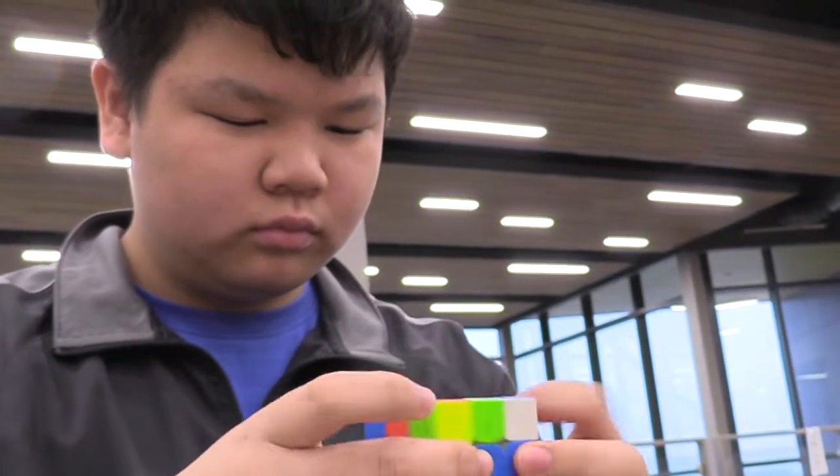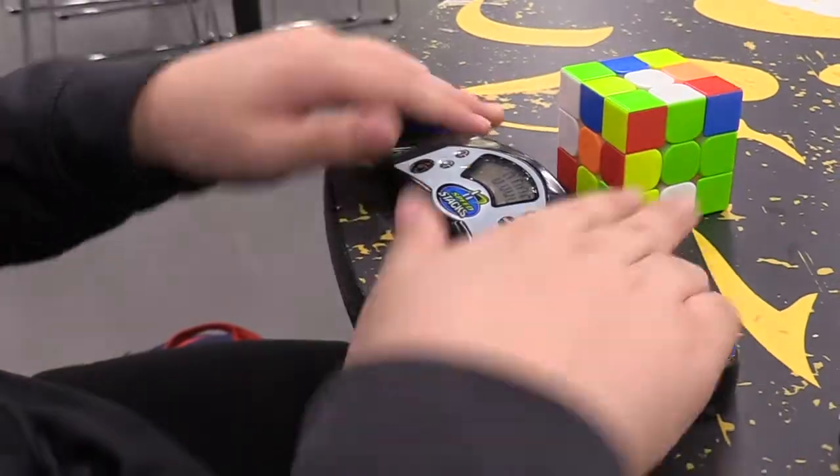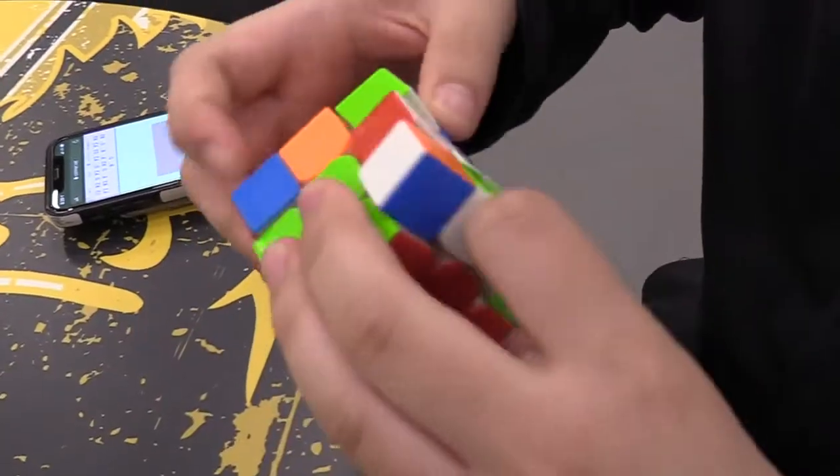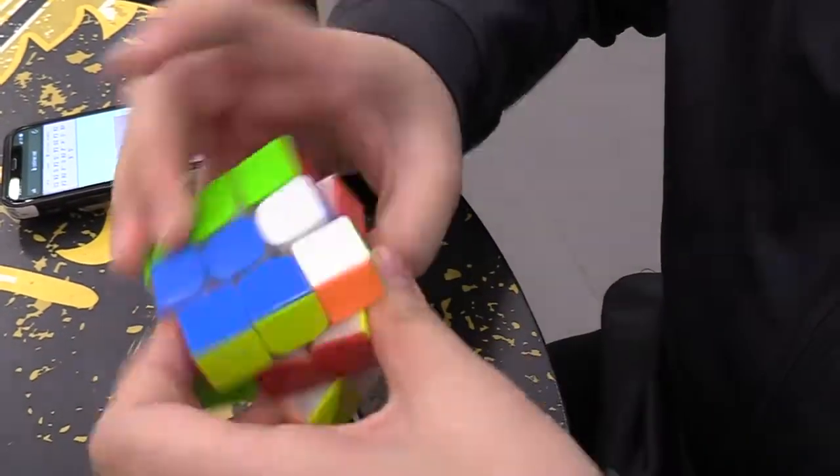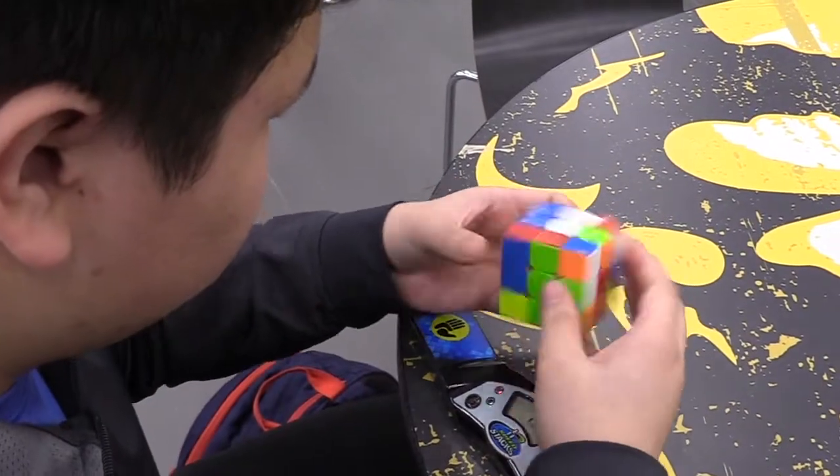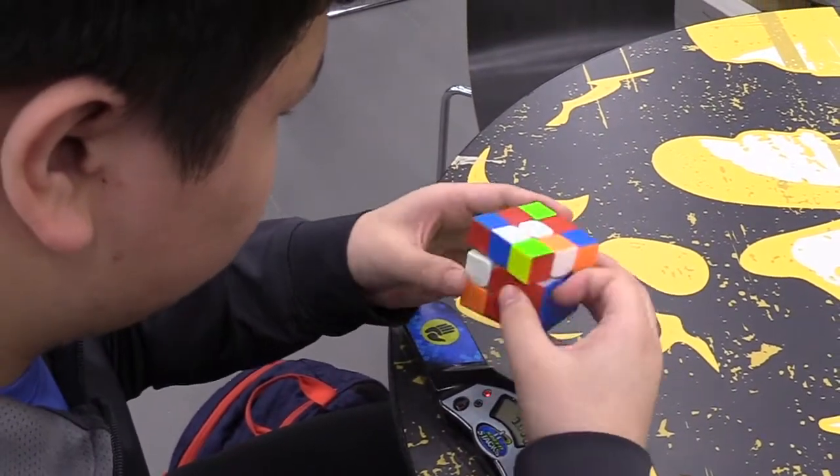If you misalign the cube by off one move, they add two seconds to your time. If you misalign it by more than one move, then it's a DNF—did not finish—and that can affect your average.